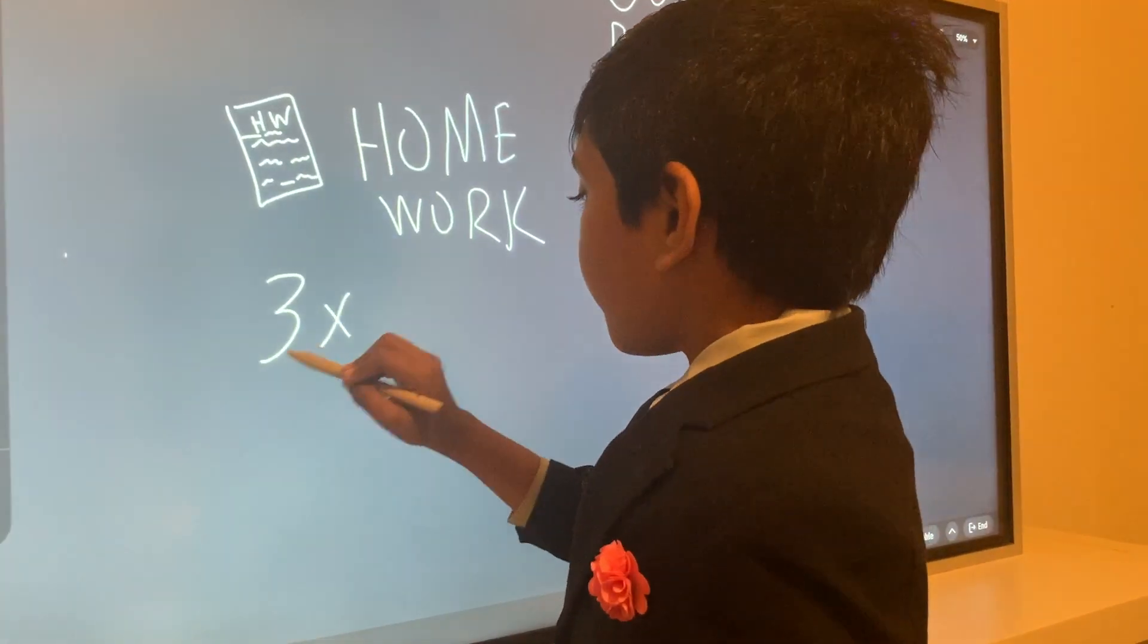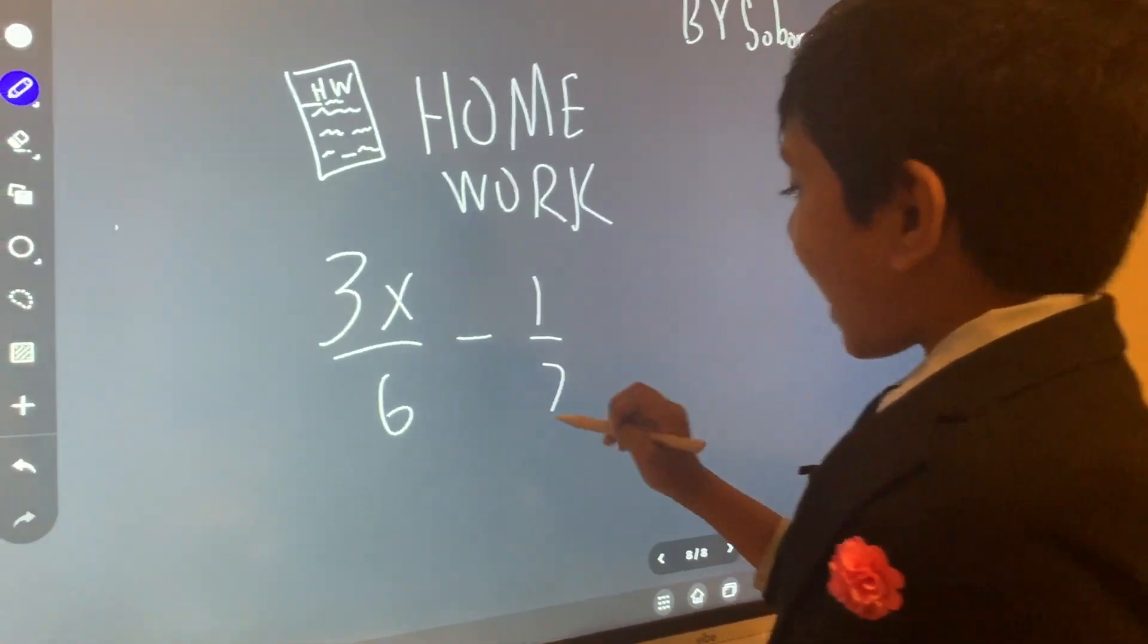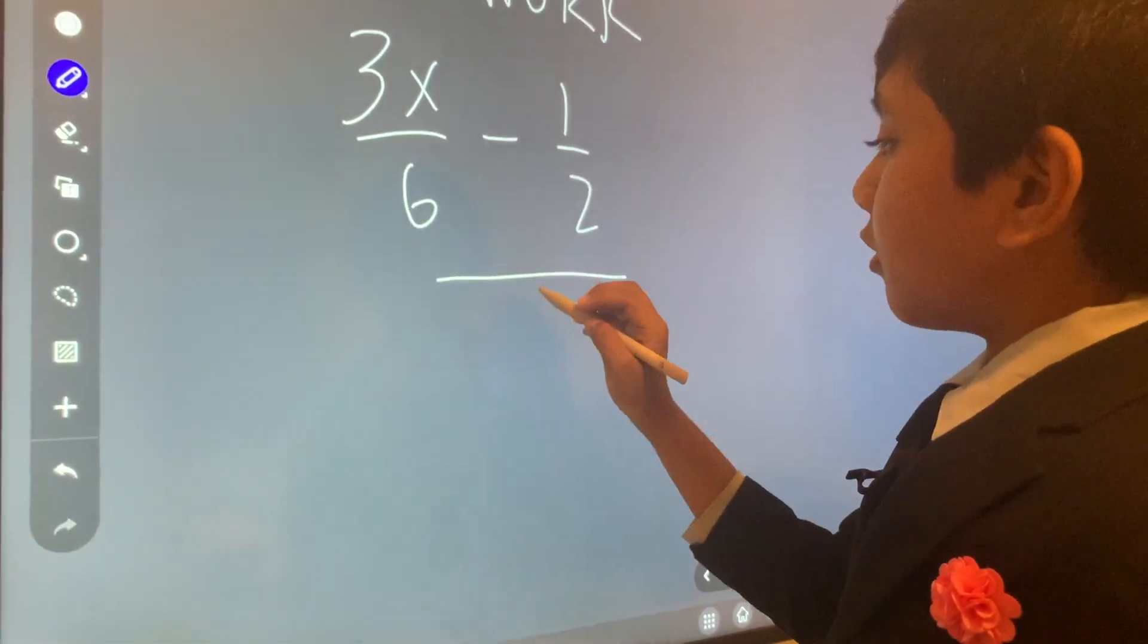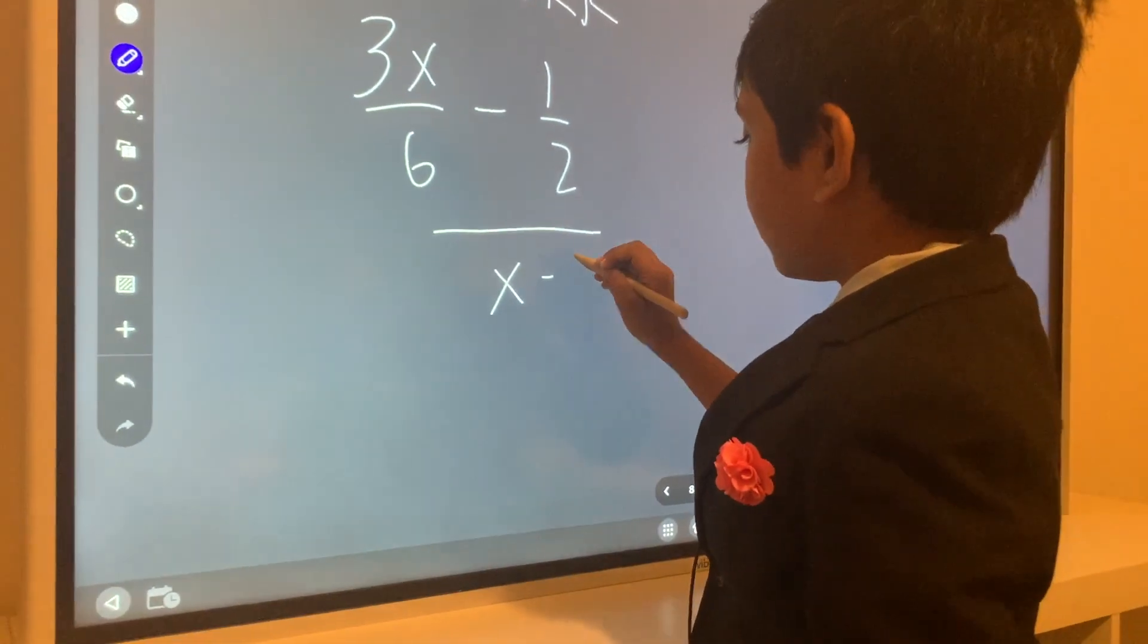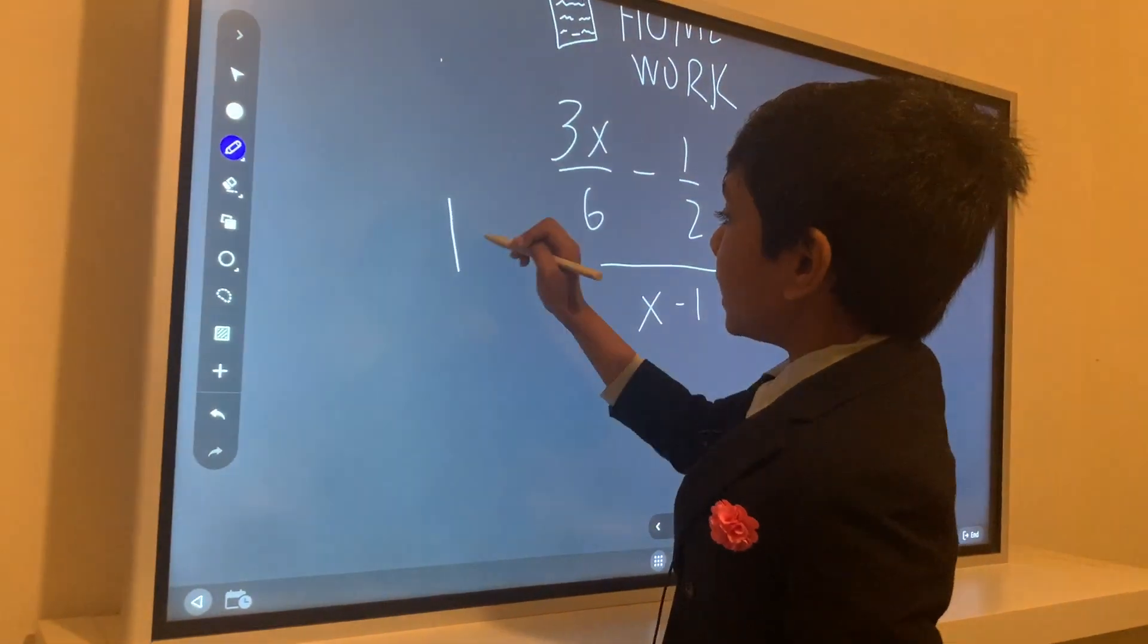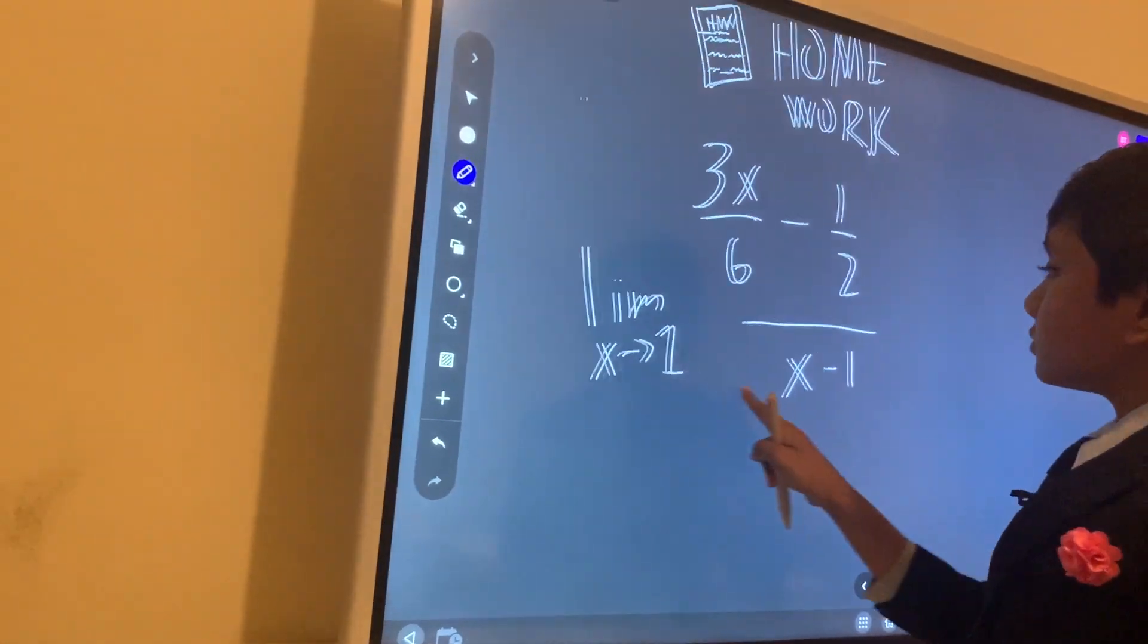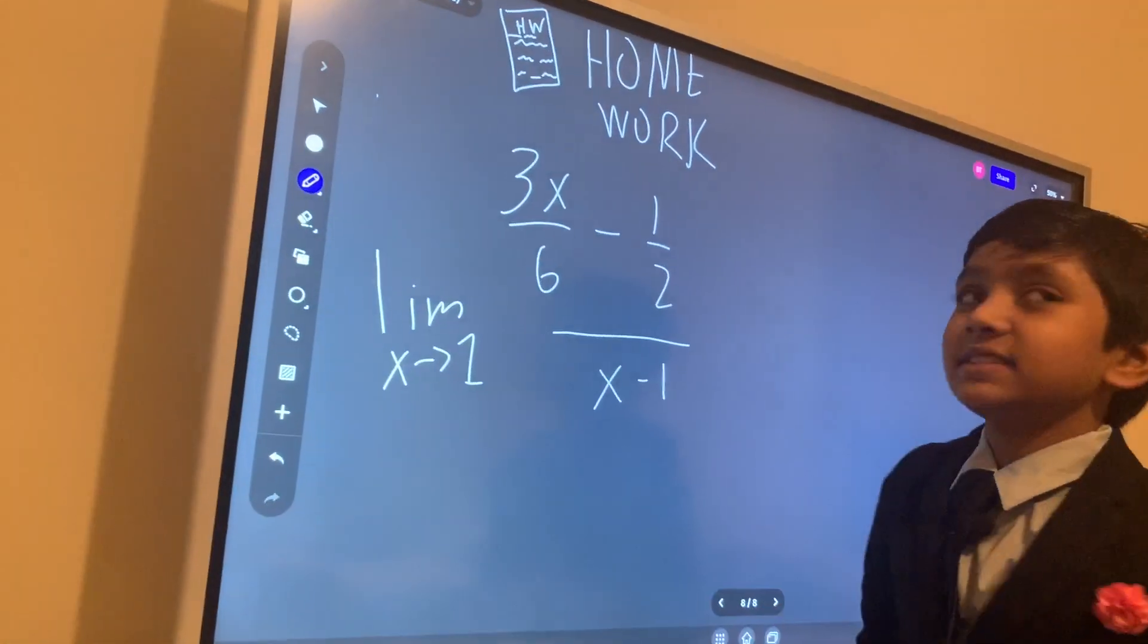3x over 6 minus 1 half divided by, what was it again? Oh yes. And the limit is x approaches 1. All right, let's see how this works.